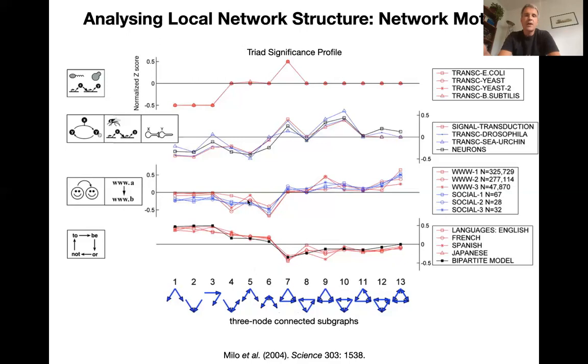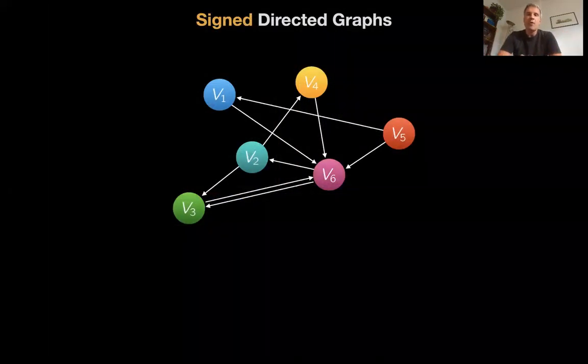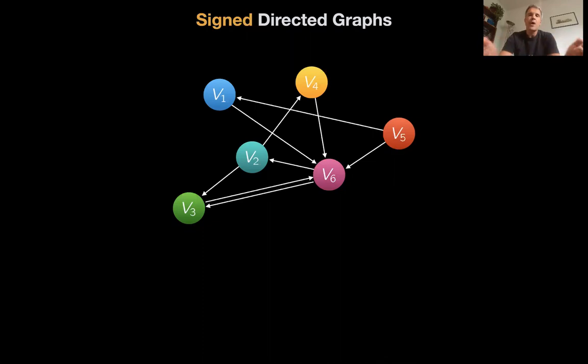And you can see that the significance profiles for each class, superclass of these different networks differs and you can group them based on this profile. What's striking here is that the transcriptional regulatory network of E. coli and these other microorganisms only has one enriched triad. And that, not surprisingly, is the feed forward motive again, which also is enriched in eukaryotic transcriptional and signaling and neuronal networks. So that really piqued people's interest because it seems that biological regulatory networks have that motive enriched while technological networks don't.